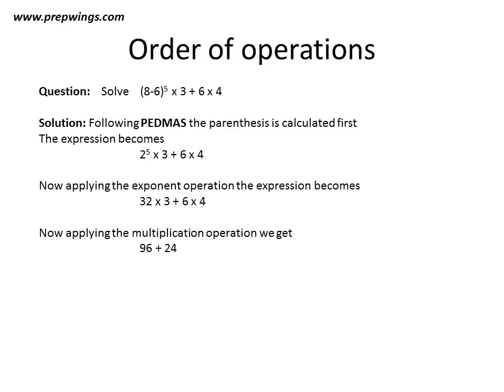Now, applying the multiplication operation, we get 96 + 24, because 32 × 3 is 96 and 6 × 4 is 24. Finally, applying the addition operation, we get 96 + 24 = 120. Thus, our answer is 120.